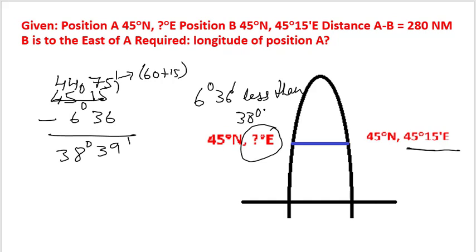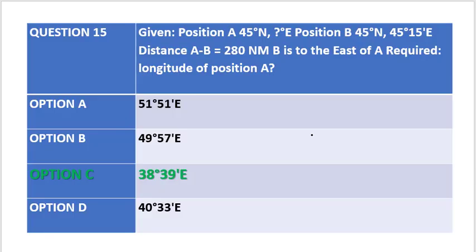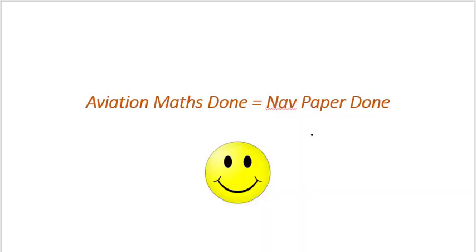38 degrees 39 minutes east should be our answer. So you see that option C matches our answer, that is 38 degrees 39 minutes east, which is the longitude of point A.